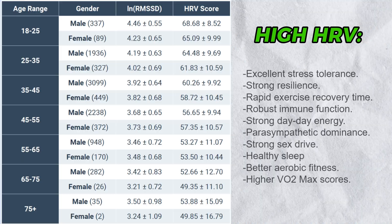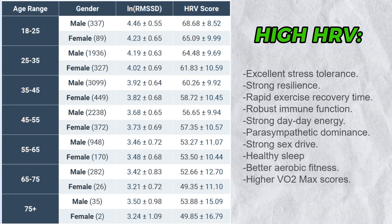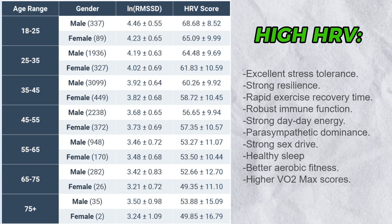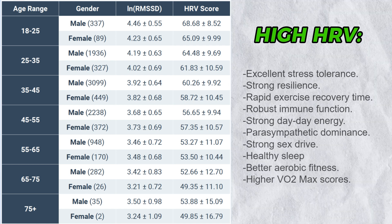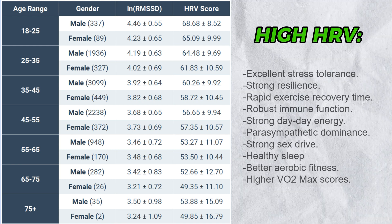Now let's look at the signs and symptoms of high HRV. I personally sit around 110 to 120 for my HRV, thanks to various biohacks and improved aerobic conditioning. High HRV is associated with excellent stress tolerance and resilience, faster recovery times, better immune functioning, more day-to-day energy, parasympathetic dominance, a strong sex drive, better aerobic fitness, and higher VO2 max scores.